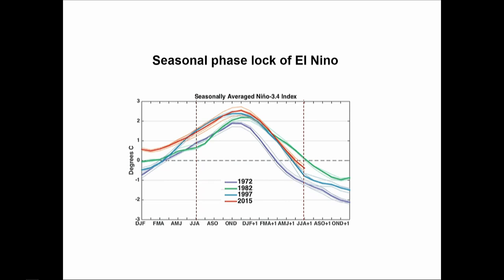Just to briefly review what typical ENSO looks like in terms of temporal evolution: the four biggest El Niños ever recorded in the instrumental record typically start in the northern hemisphere summer, growing and peaking roughly in the northern hemisphere winter. Then they decay rapidly in the following spring, and by the following summer the SST anomalies in the equatorial Pacific have roughly dissipated almost altogether.